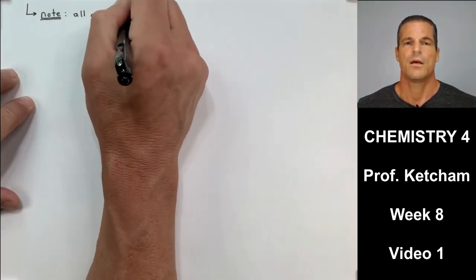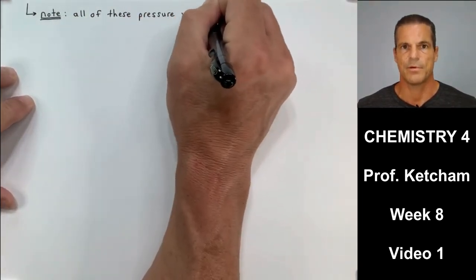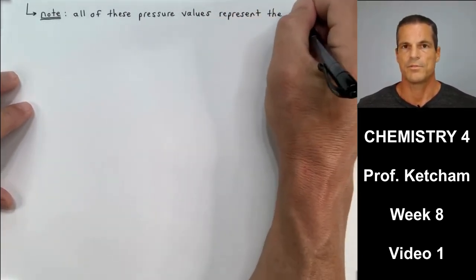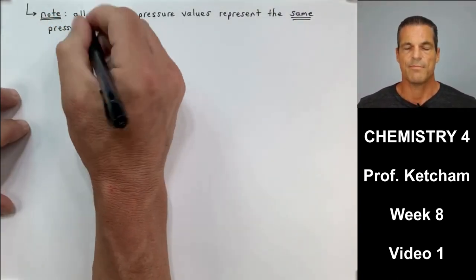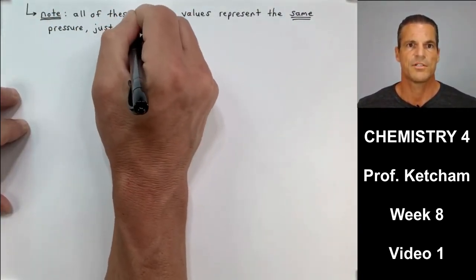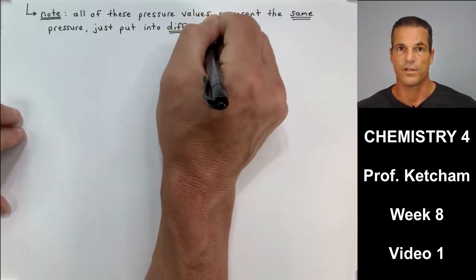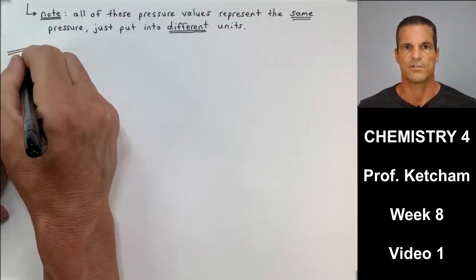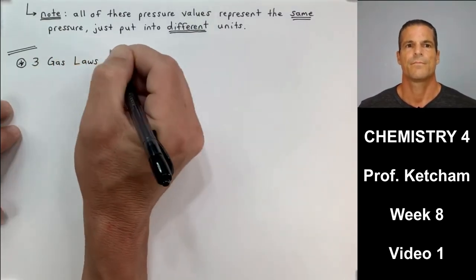All right, just a note here. All of those pressure values that we just got in that last sample problem, whether the units were millimeters mercury or atm or torr, that was the same value, the same pressure, just put into different units. Like 12 inches is equal to a foot, or 100 centimeters is equal to one meter. That's all conversion factors do. Conversion factors change your units, not your value.